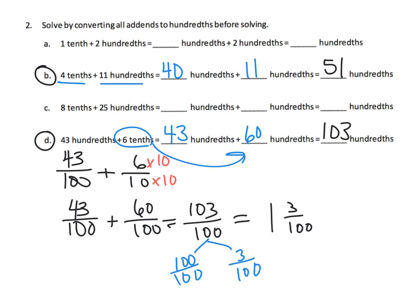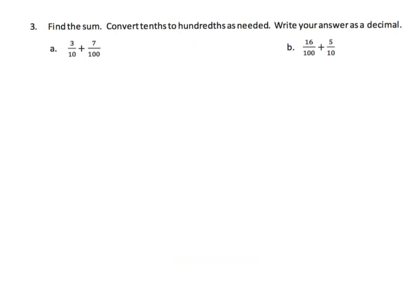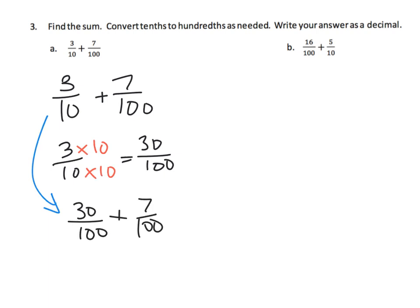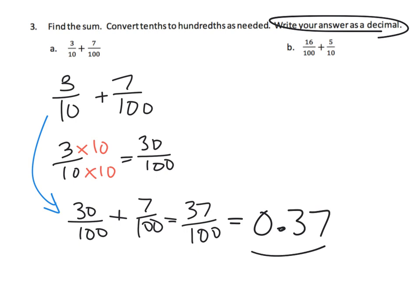The directions say we can leave it as 103 hundredths. Here they're letting us solve any way we want and leave our answer as a decimal. Looking at 3 tenths plus 7 hundredths: we multiply both numerator and denominator by 10 to get 30 hundredths, so this becomes 30 hundredths plus 7 hundredths, which equals 37 hundredths. We need to write the answer as a decimal, so we write 0.37.